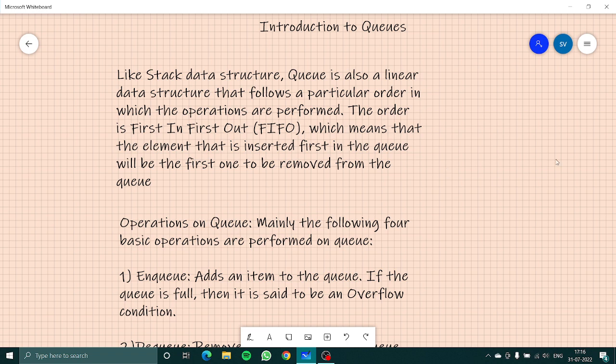So what are queues exactly? Like the stack data structure, queue is also basically a linear data structure that follows a particular order in which the operations are performed. The order is first in and first out (FIFO), which means that the element that is inserted first in the queue will be the first one to be removed.